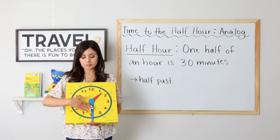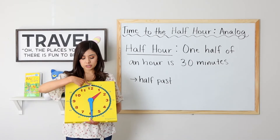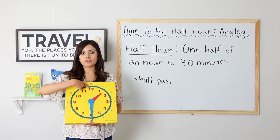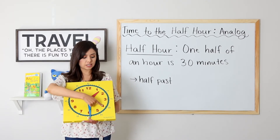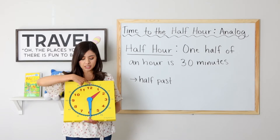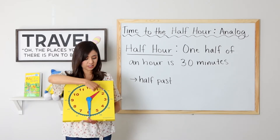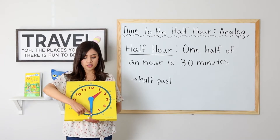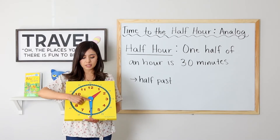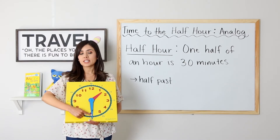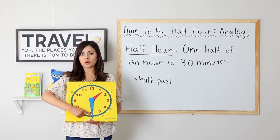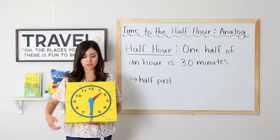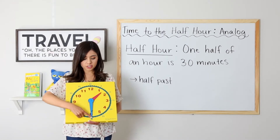Now let's go ahead and take a look at the minute hand. We start at our starting point, 12, with zero. Then we will count by fives as we hit each number: zero, five, ten, fifteen, twenty, twenty-five, thirty. When the minute hand touches the six, it means it is thirty minutes past the hour. So in this example, it is one thirty.